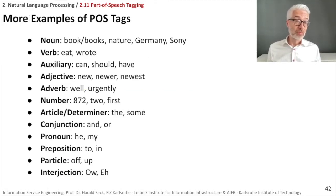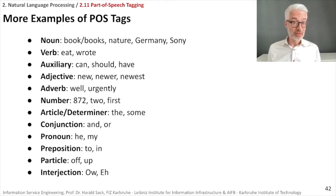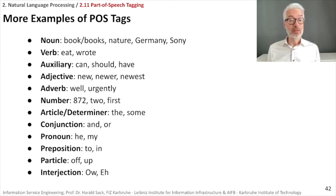Here are examples of the most common POS tags. For nouns: book, books, nature, Germany, Sony. Verbs: eat, write, wrote — different tenses are all verbs. Auxiliaries, besides 'do': can, should, have. Adjectives: new, newer, newest — you can also have a comparative and superlative. Adverbs: well, urgently — they further describe a verb. Numbers are also a distinct class. Articles or determiners: the, some, a, an. Conjunctions: and, or. Pronouns as already discussed. Prepositions: to, in, on. Particles: of, up. Interjections: au, ee, oo — just as examples of more parts of speech.